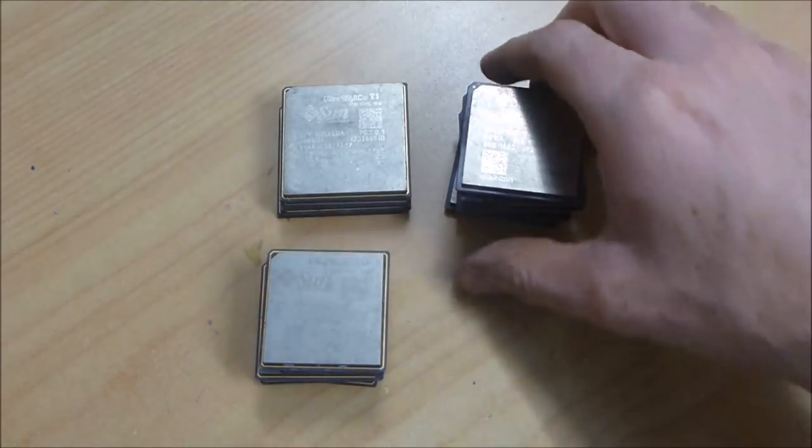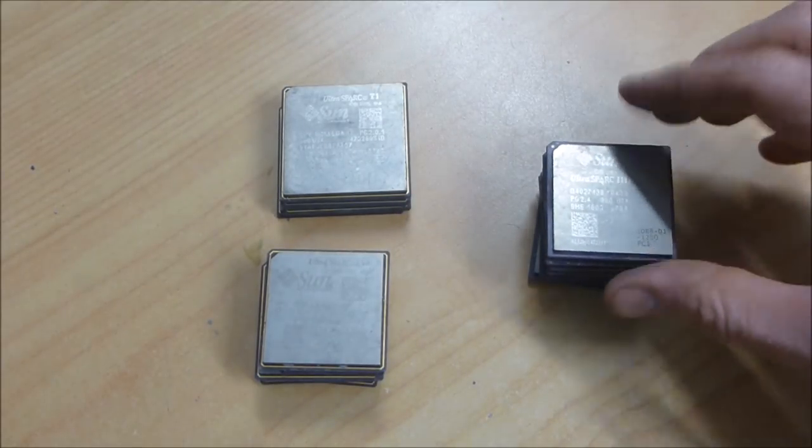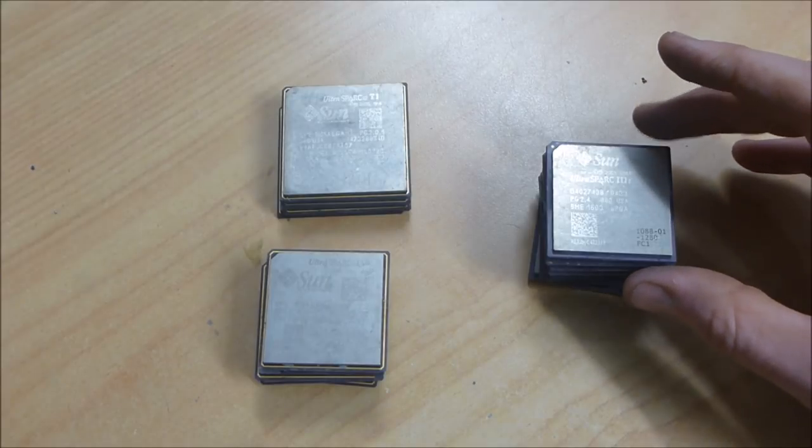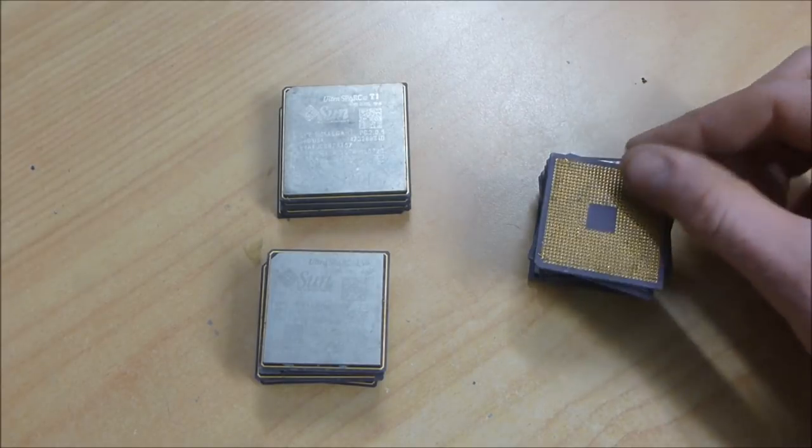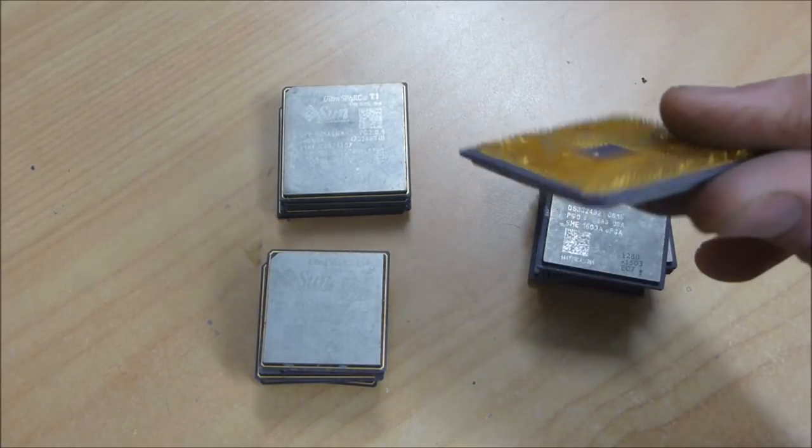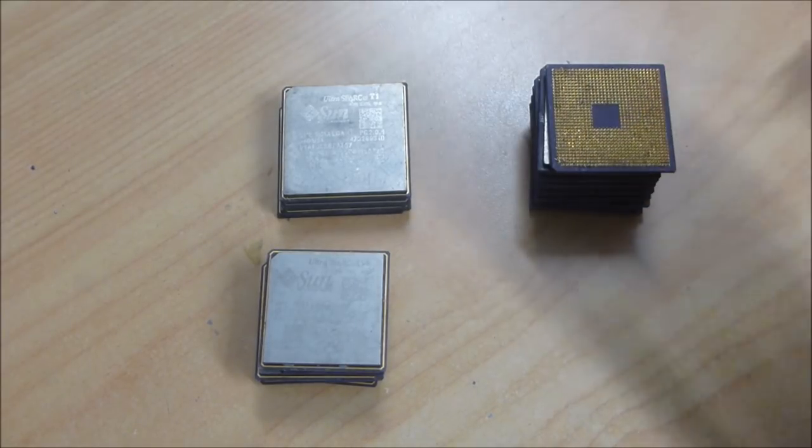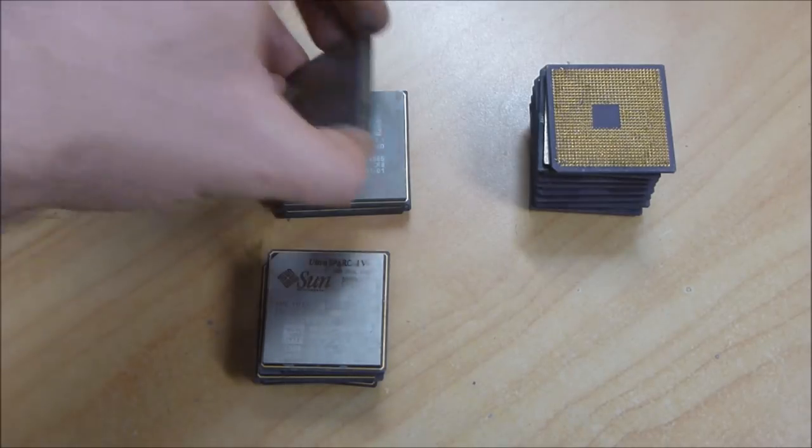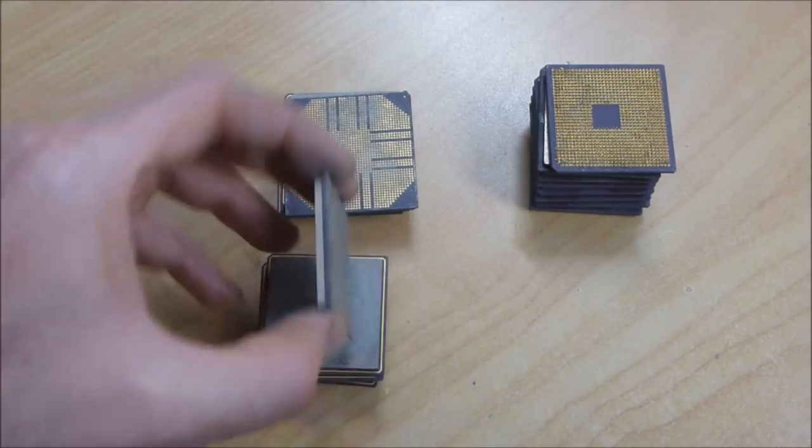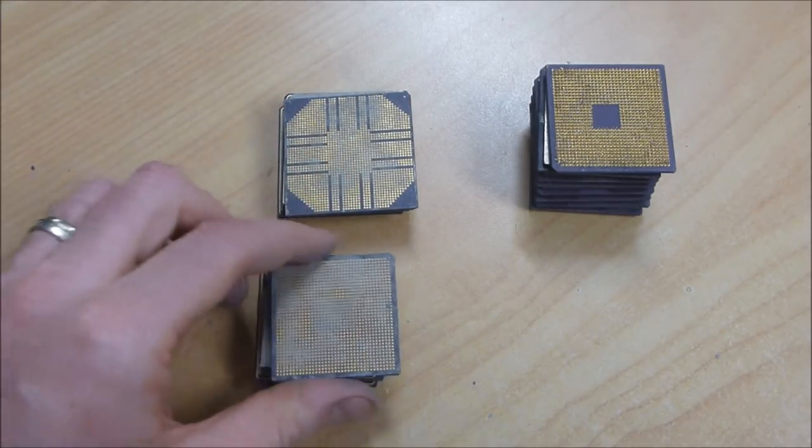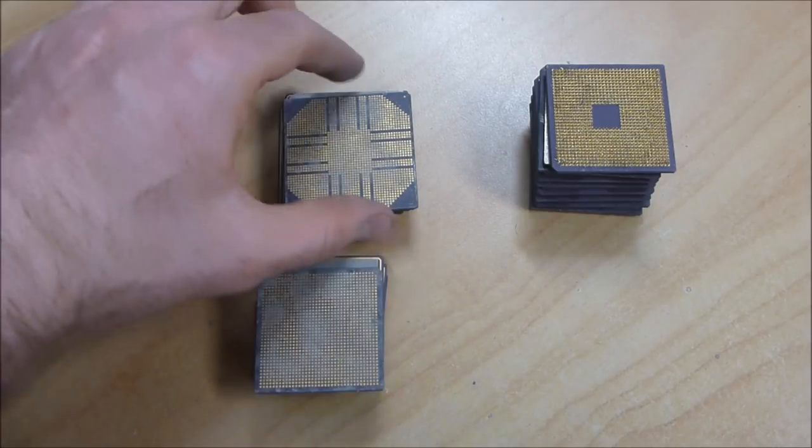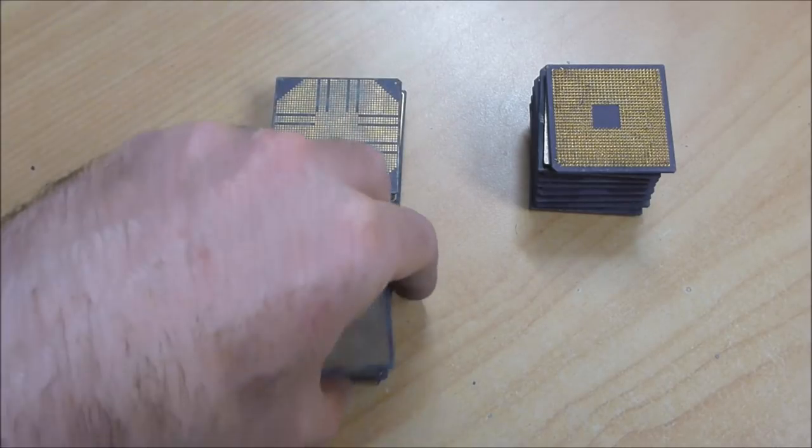What we've essentially got here is two different types overall. We've got these ones on the right which are a Sun UltraSPARC 3i and they have gold-plated pins very similar to maybe a Pentium 4 or something like that, very small pins.